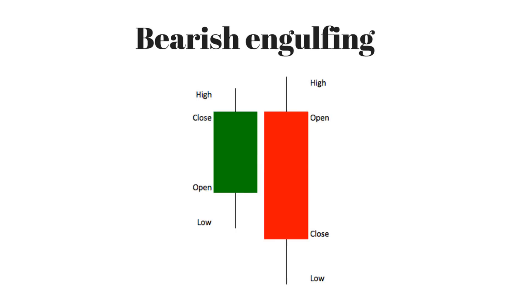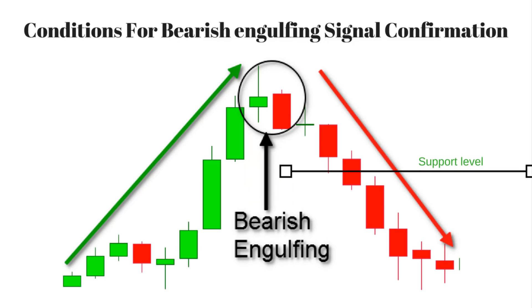Bearish engulfing: the bearish engulfing candlestick pattern is considered to be a bearish reversal pattern usually occurring at the top of an uptrend. The pattern consists of two candlesticks: a smaller bullish candle followed by a larger bearish candle. Conditions for bearish engulfing signal confirmation — first condition: it should be formed after an uptrend.